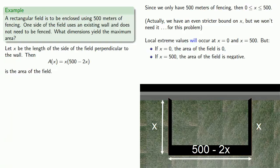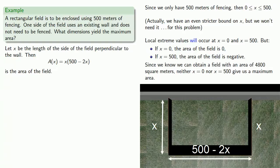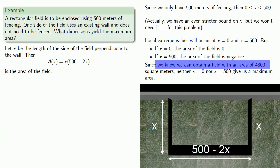And if x equals 500, the area of the field is negative something or other. And since we've already found a field with an area of 4800 square meters, neither one of these is going to give us a maximum area. We know that x equals 0 won't give us a maximum area, because we can already exceed the area that we would get. And we know that x equals 500 won't give us a maximum area for the same reason. And that means we have to do some calculus.